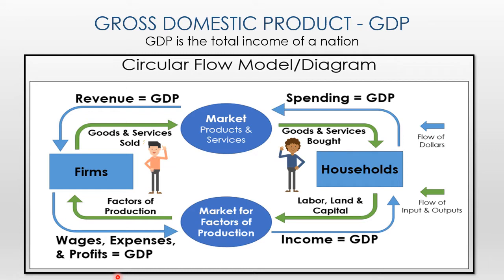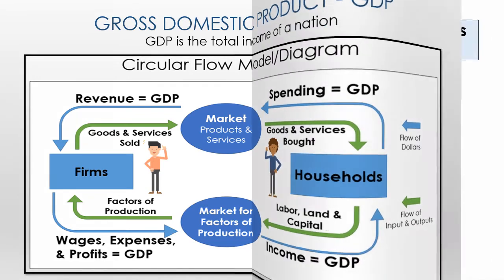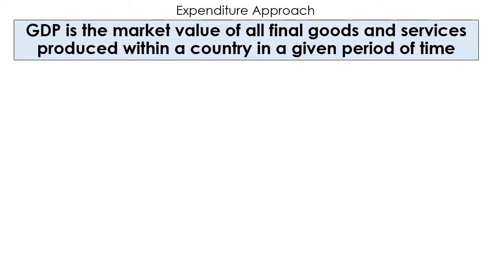Now that you have a general understanding of what GDP is, let's get to a more precise definition. GDP is the market value of all final goods and services produced within a country in a given period of time. There are a couple of aspects of this we need to go through to make sure we understand exactly what it's talking about.